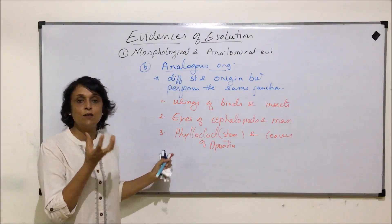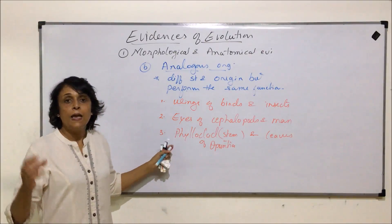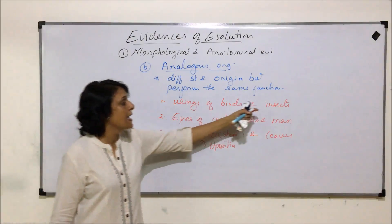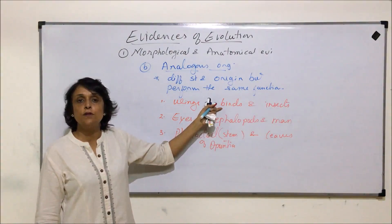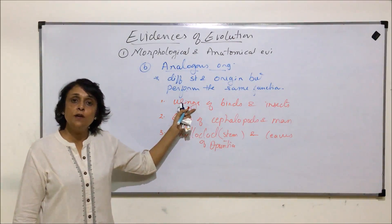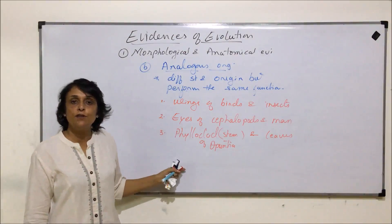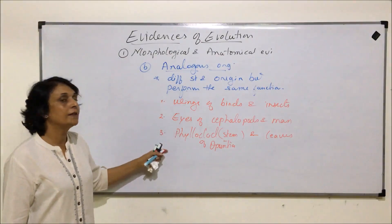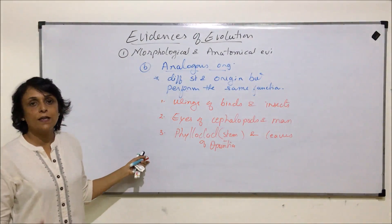Analogous organs help us understand convergent evolution. If different organisms come to live in the same kind of habitat, they need similar structures — for example, birds and insects both fly, so wings are required, but these wings developed from different tissues, which is why their origin is different. They have converged to perform the same function. So analogous organs help us understand convergent evolution. The next subcategory under morphological and anatomical evidences is vestigial organs.